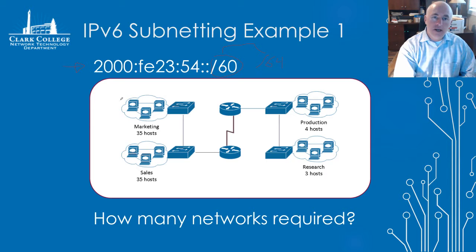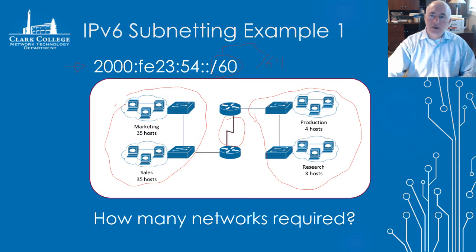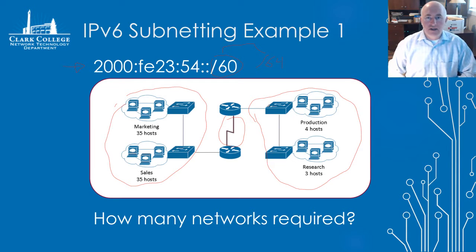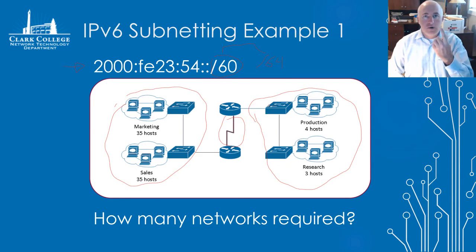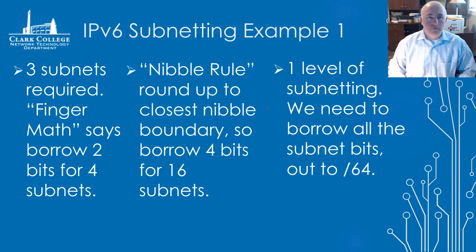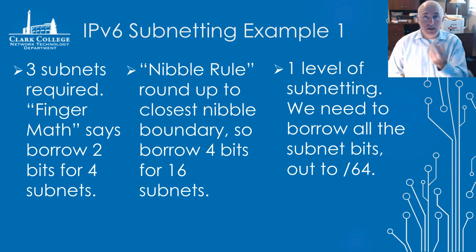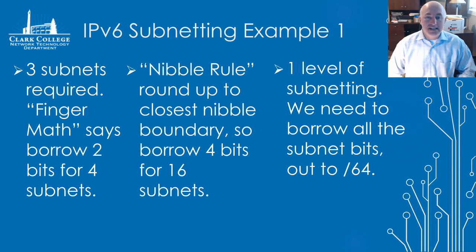The second prerequisite is your user requirements for how many subnets. We can see that we have three subnets, so we use finger math to calculate the bits needed: two raised gives us four, so we need two bits to accommodate three subnets. The nibble rule, however, tells us to round up to the closest nibble boundary — the closest nibble to two bits is four bits — so we'll borrow four bits, creating 16 subnets.